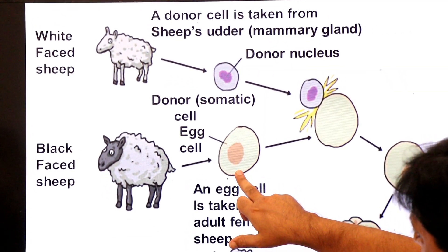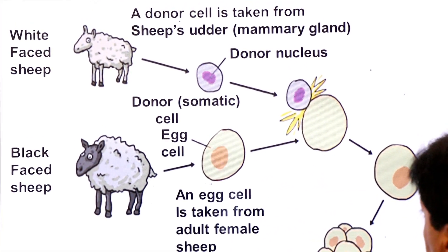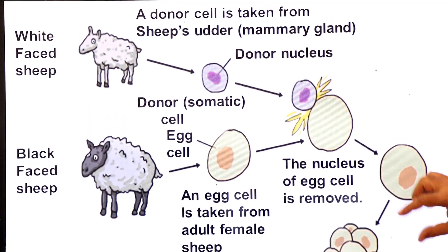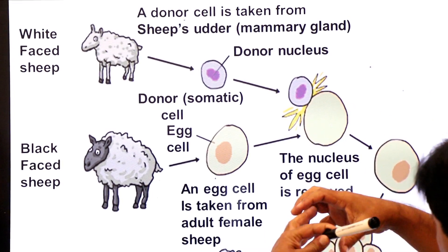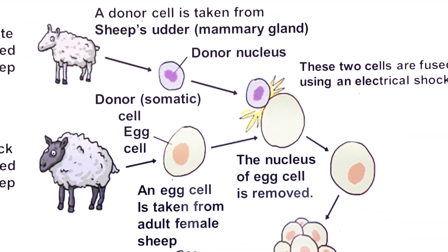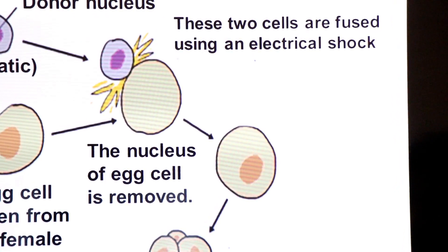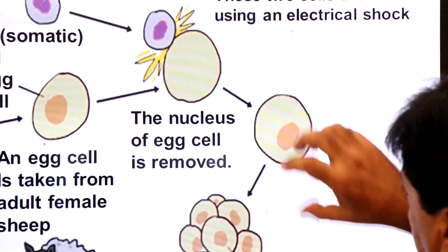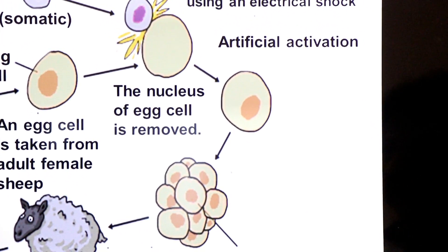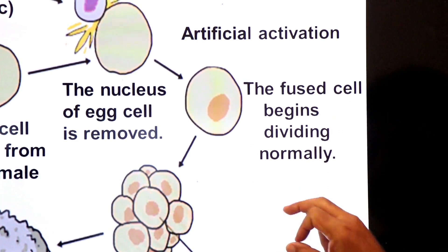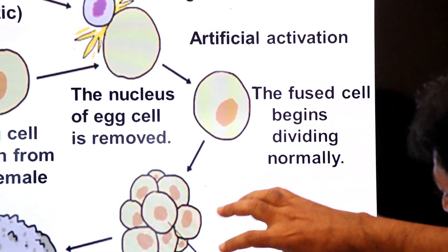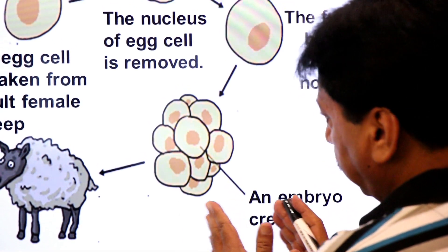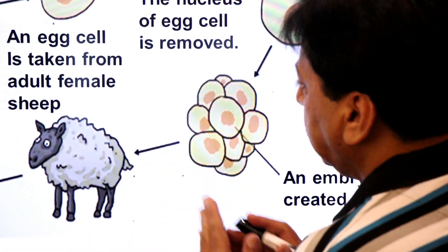These two cells are fused using an electrical shock — this is called nuclear transfer, and the electrical shock is called artificial activation. The fused cell then begins dividing normally, and an embryo is created. This embryo is then placed into the uterus of the black-faced sheep.